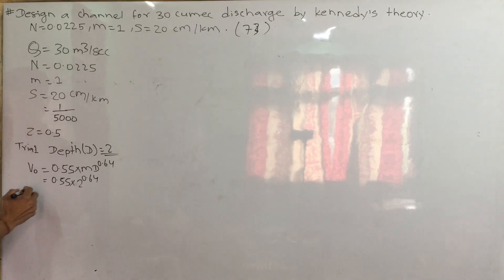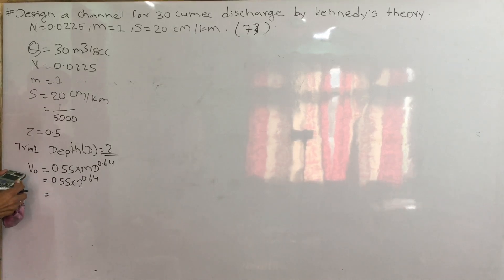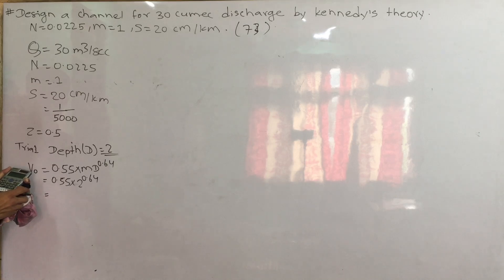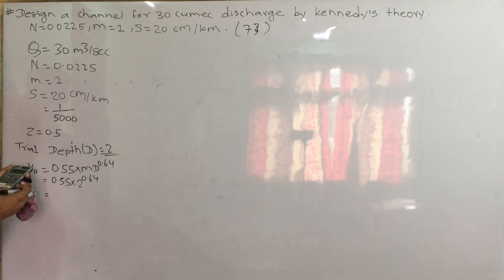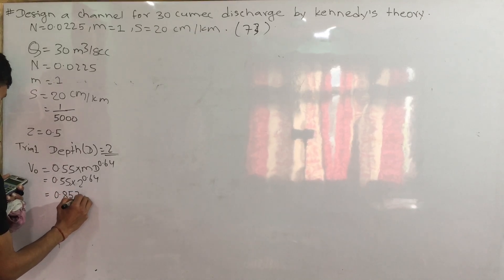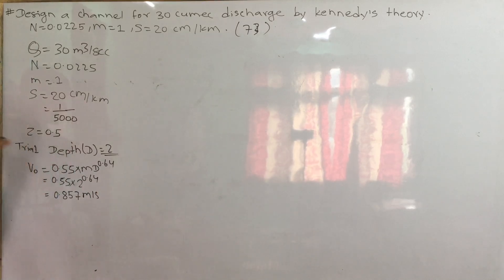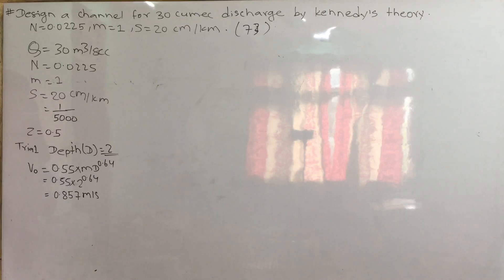I will try to get the value. Sorry, this is wrong. It is 0.55 into 2 to the power 0.6. I will try: 0.55 × 2^0.6. This gives approximately 0.857 m per second velocity.